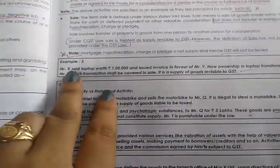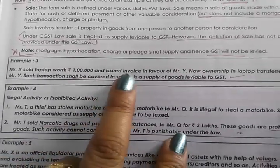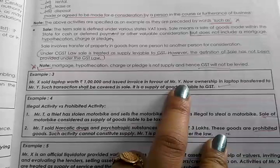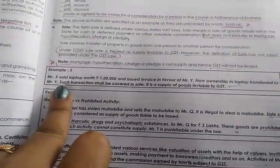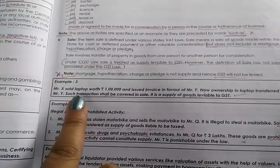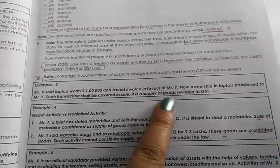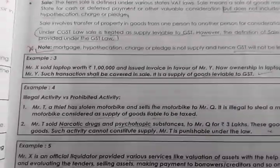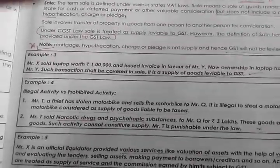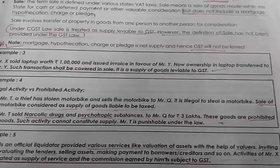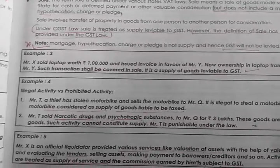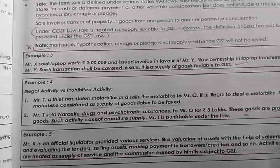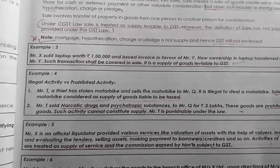Mr. X sold a laptop worth rupees 1 lakh and issued an invoice in favor of Mr. Y. He sold the laptop and ownership of the laptop transferred to Mr. Y. When he sells, he transfers ownership — so this is the example of sale. Such a transaction shall be covered under sale. It is supply of goods and available for tax. Sale is levyable for GST.